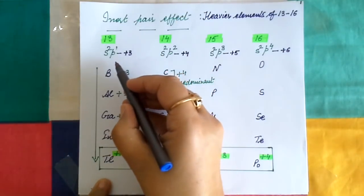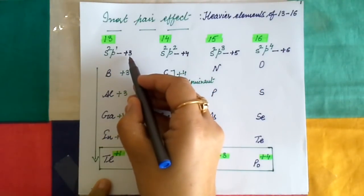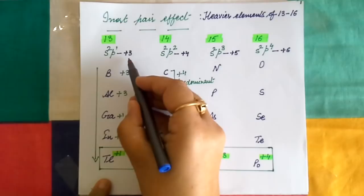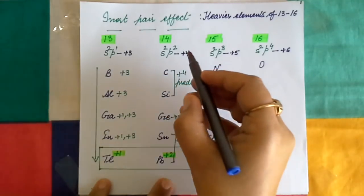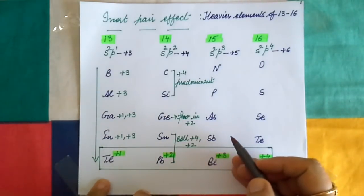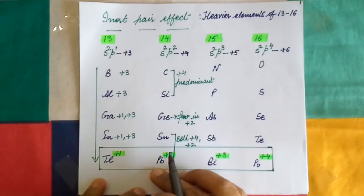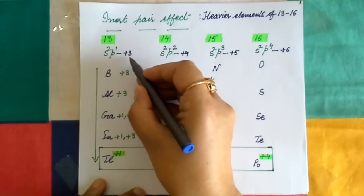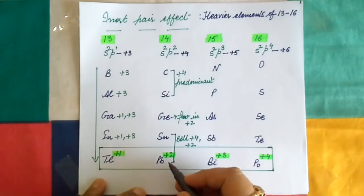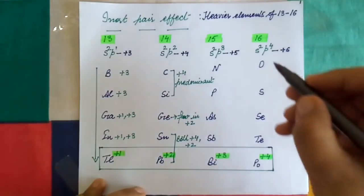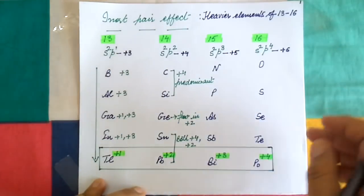For example, in the case of the 13th group, the group oxidation state is +3 because the outer electronic configuration is ns² np¹, so 2 plus 1 gives +3. Similarly, in the 14th group, the group oxidation state is +4. In the case of thallium, the oxidation state is +1, which is two units less than +3, and in the case of lead, the oxidation state is +2, which is two units less than +4. The same applies to groups 15 and 16.